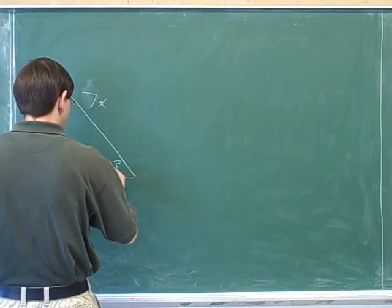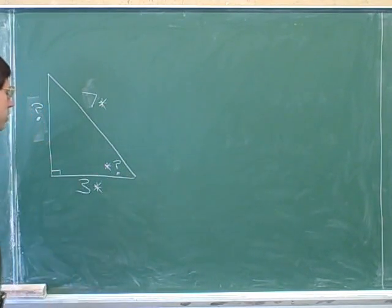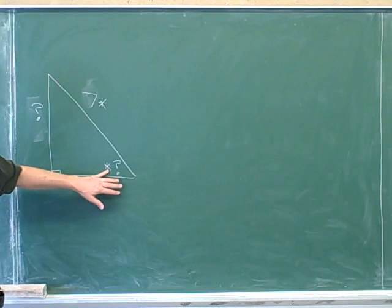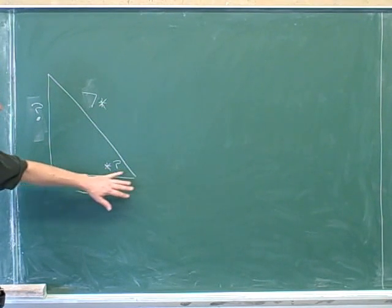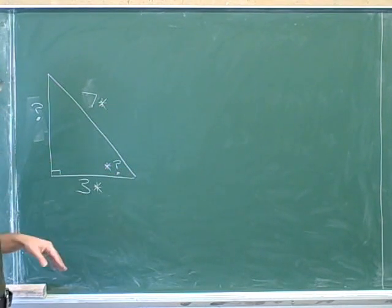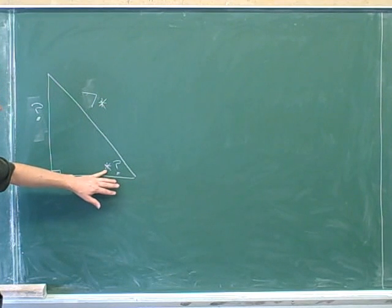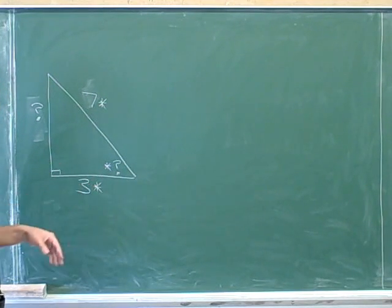And also we've been indicating the angle that the question is asking us about with an asterisk. Now this asterisk doesn't mean that we've been given this angle. We haven't been given the angle. This asterisk is just to remind ourselves that this is the angle we're focusing on. Clearly we want to focus on the angle that the question is about.